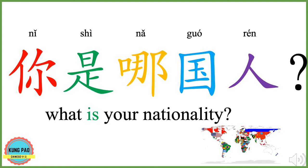你是哪国人? 你 means you. 是 means am, is, or are. 哪 here means which. 国 means country. 人 means person or people. 你是哪国人? In English we say: what is your nationality, or which country are you from?